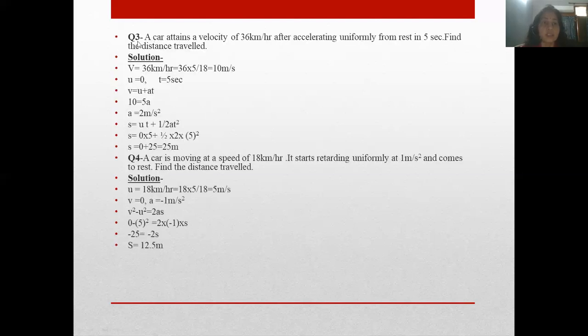Next is question third. A car attains a velocity - again attain means final. Attain means it has acquired final velocity. A car attains, that is final velocity of 36 km/h, after accelerating uniformly from rest. From rest means U is zero. Started from rest and acquired velocity up to 36. So V is 36, U is 0, time is 5 seconds. Find the distance traveled. Now we have to calculate S.